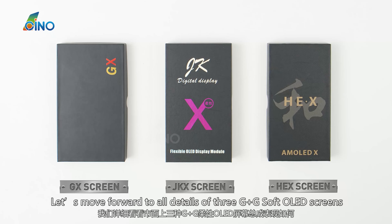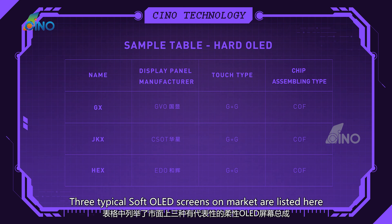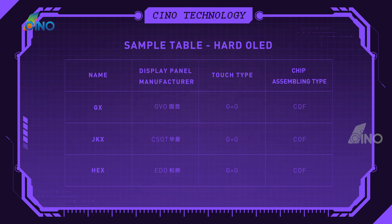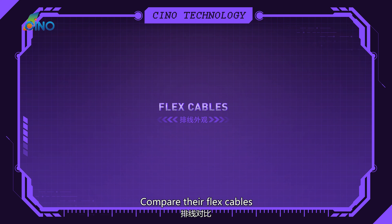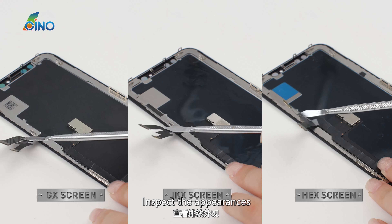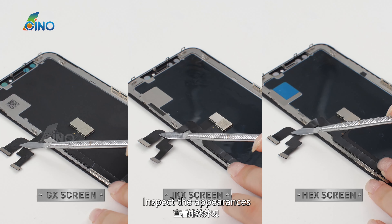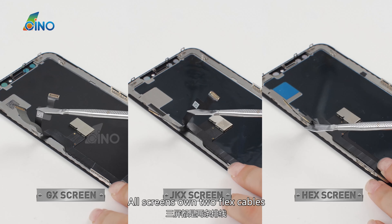Let's move forward to all details of G plus G soft OLED screens. Three typical soft OLED screens on the market are listed here. Compare their flex cables and inspect the appearances. All screens own 2 flex cables.